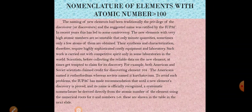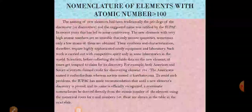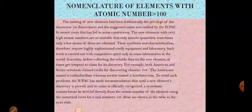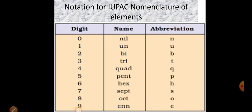That is why we need a nomenclature of elements — because if an element is named after its discoverer and multiple scientists claim the same discovery, it creates controversy and conflict. That is why IUPAC recommended one set of rules called numerical roots.